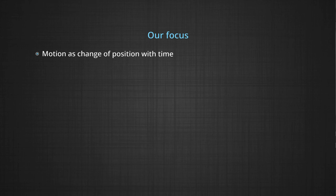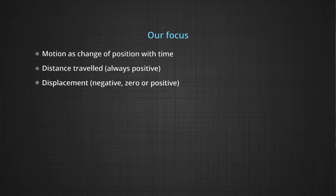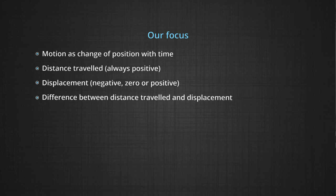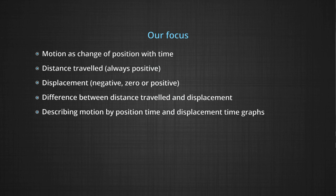We explain this by two terms: distance travelled and displacement. Displacement can be negative, zero, or positive, but the distance travelled is always positive. There is a difference between distance travelled and displacement. We can describe motion by position-time and displacement-time graphs.